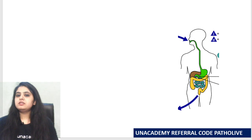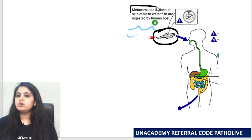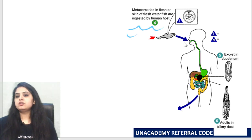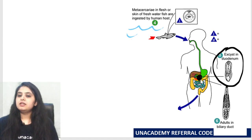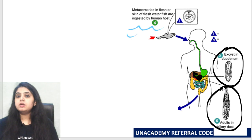Here we have the man. How did the man get the infection? By consuming fish — fresh water fish. The fish is carrying the metacercaria larva, and we end up ingesting it. When we eat it, it reaches our duodenum. On reaching the duodenum, it comes out there and then ascends along the biliary tract, where adult worms will form.